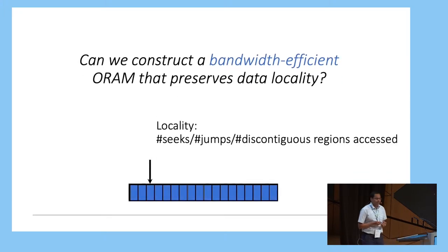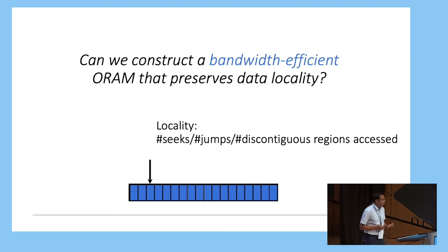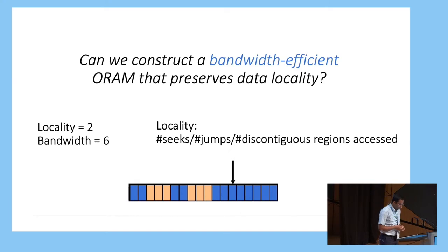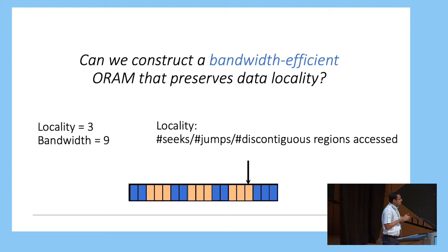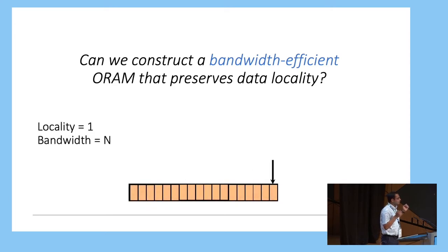The notion of bandwidth-efficient is important here. But first, let us define what I mean by locality. At a very high level, locality is just the number of head seeks, or head jumps, or the number of discontinuous regions accessed. If I'm making one ORAM access and the head accesses 3 contiguous blocks, this contributes 3 to bandwidth and 1 to locality. If the head then performs a jump and makes another set of accesses, both locality and bandwidth increase. So at a high level, I'm just trying to reduce the number of head seeks or jumps.